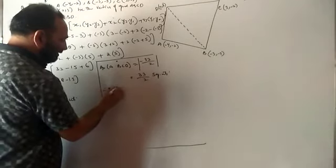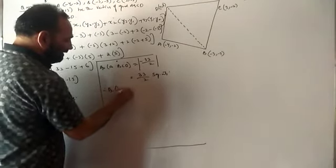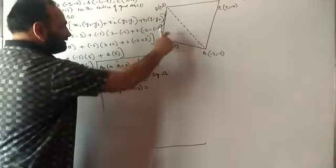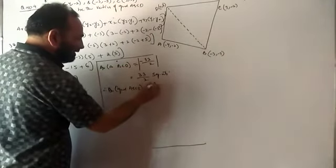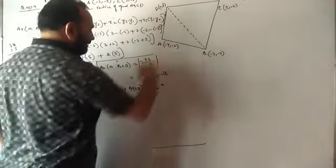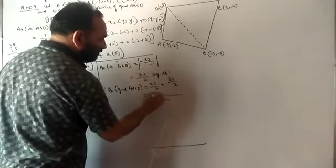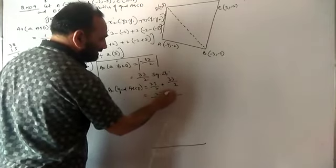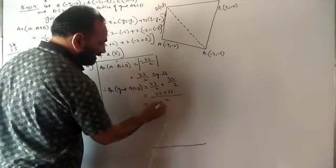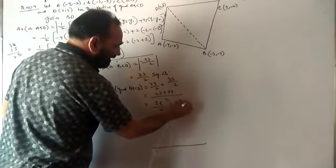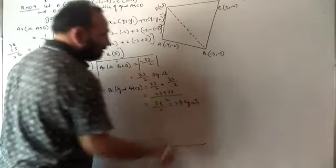So therefore, area of quadrilateral ABCD equals to area of this triangle, that is 23/2, plus area of this triangle, what is that, 33/2. Find the LCM, 2, 23 plus 33, that will become 56/2, that is 28 square units. I hope you have got the question, but you write properly this. You have to write it like this. You have to find the value of that triangle properly using this formula, then you will get this conclusion.